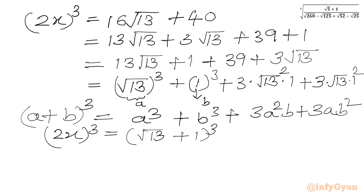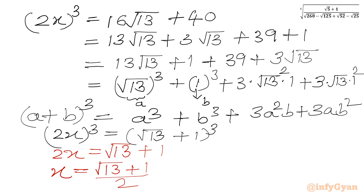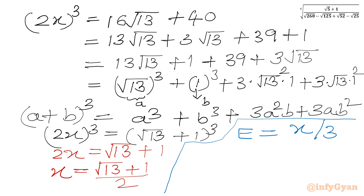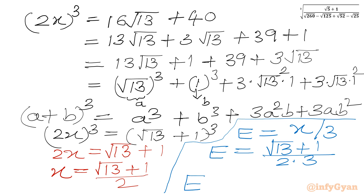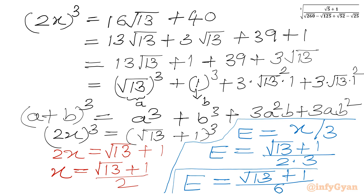So 2x whole cubed becomes root 13 plus 1 whole cubed. Taking cube root of both sides gives 2x equal to root 13 plus 1, so x equals root 13 plus 1 over 2. Now our expression E was x over 3, so putting the value of x we get E equal to root 13 plus 1 over 3 times 2. So our final answer is E equal to root 13 plus 1 over 6. I hope friends you will like this video. Thank you so very much for watching — do not forget to like, share and subscribe. Bye-bye till next video. Good luck and take care of yourself.